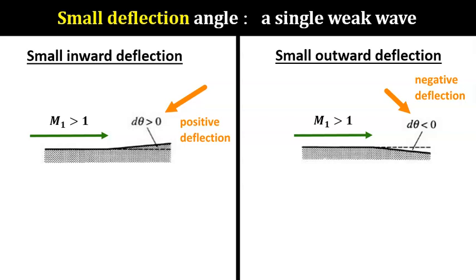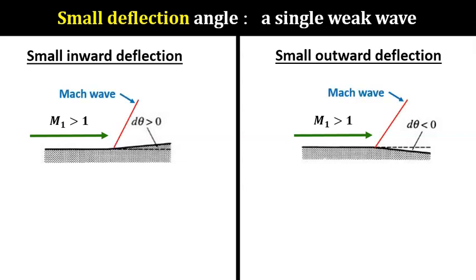Each deflection produces a small disturbance to the supersonic flow. This process remains isentropic for both cases, because the changes are very small. And because the incoming flow is supersonic, the small disturbance will only produce a Mach wave, which is a very weak wave. We've learned about Mach waves in our second topic.